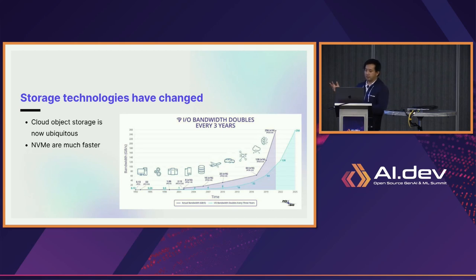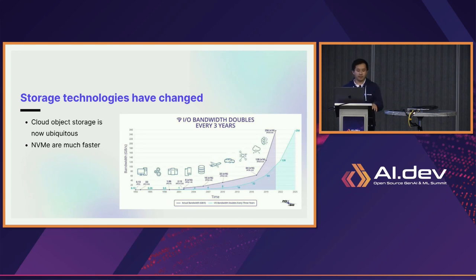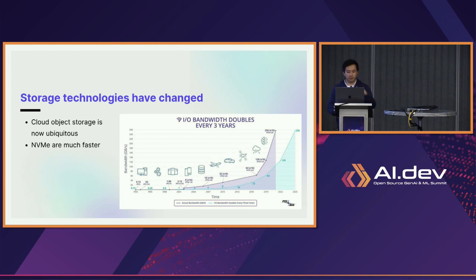Even without those managed solutions, if you look at NVMe storage, IO bandwidth doubles every three years roughly — it's like the new Moore's Law for storage. They've also become a lot faster. When Parquet was designed, cloud and object storage wasn't nearly as ubiquitous, so a lot of its assumptions were made for a much older generation of storage technology.